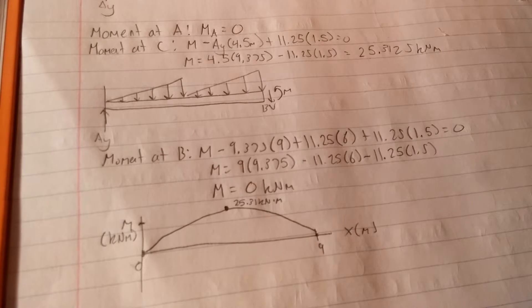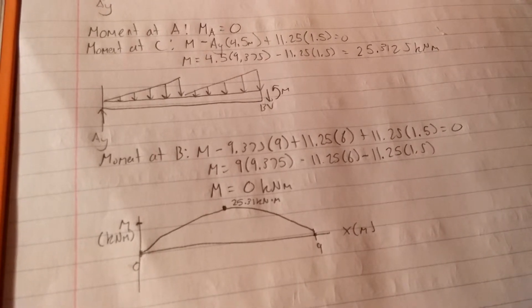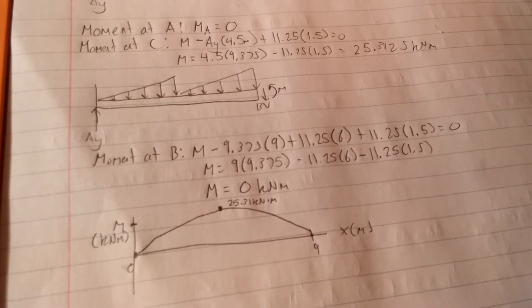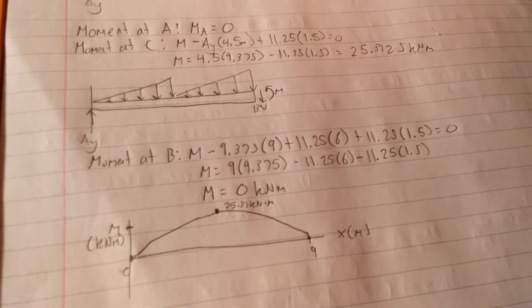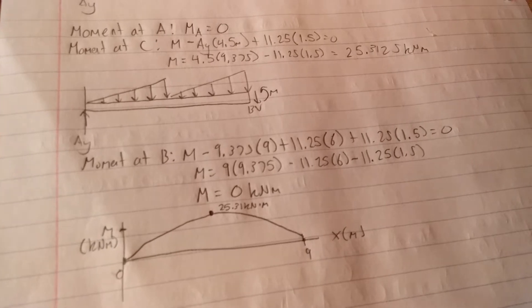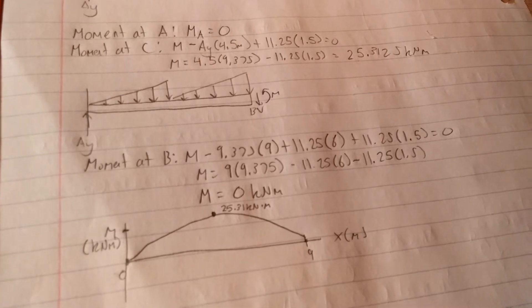The first 11.25, they're both going to be positive because they'll create a counterclockwise rotation. First one is times 6 meters, the second one is times 1.5 meters. The moment there actually ends up being zero as well.